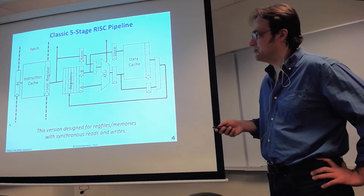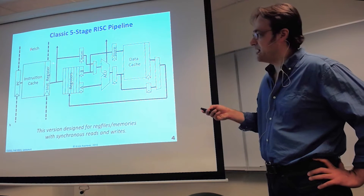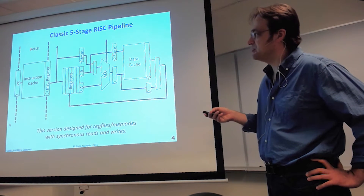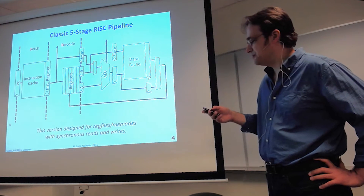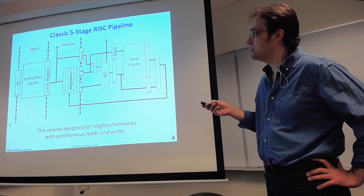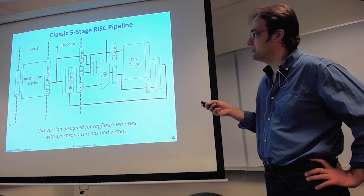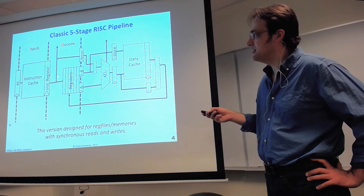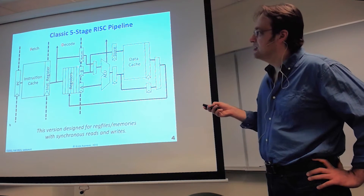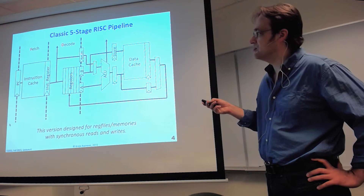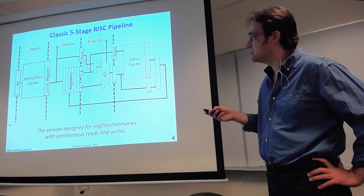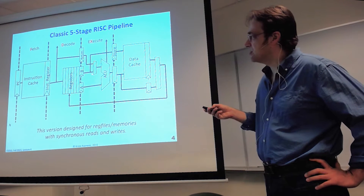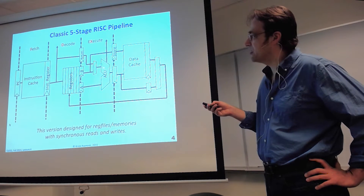The first stage is instruction fetch: you take the program counter, feed it to the instruction cache, and sometime later get the instruction captured in the instruction register at the end of the clock cycle. Then you have the decode stage, where you take the instruction bits, decode them, figure out the control, pull out the register fields needed, read out the registers you're going to use, and pull out any immediate operand encoded in the instruction bits. These then get fed into the execute stage, which has the ALU plus muxing logic to get the correct operands — whether a register file value or an immediate value.